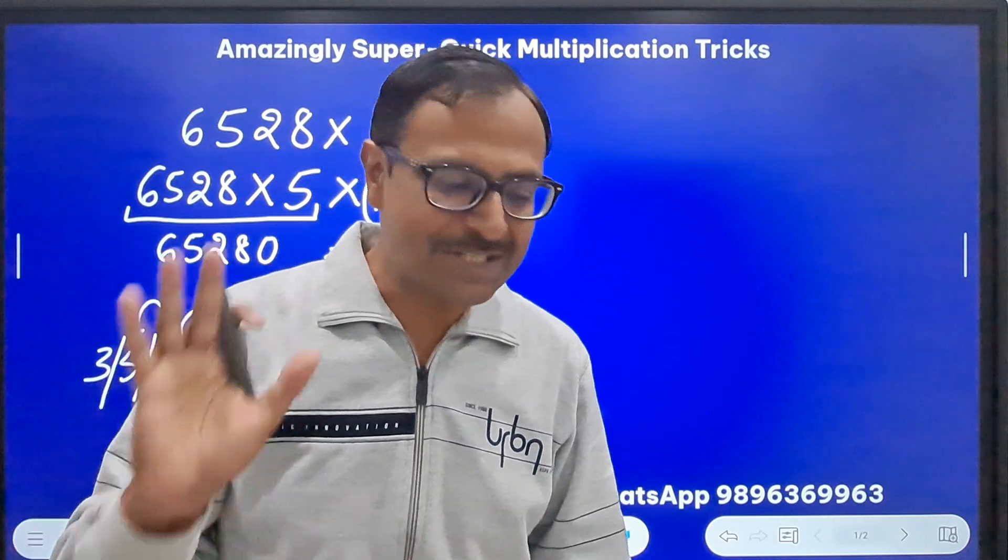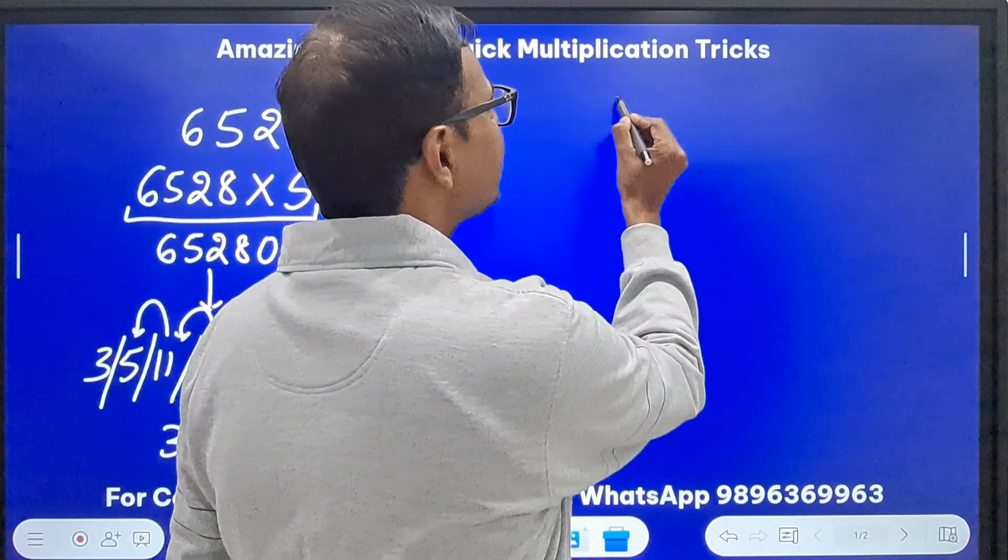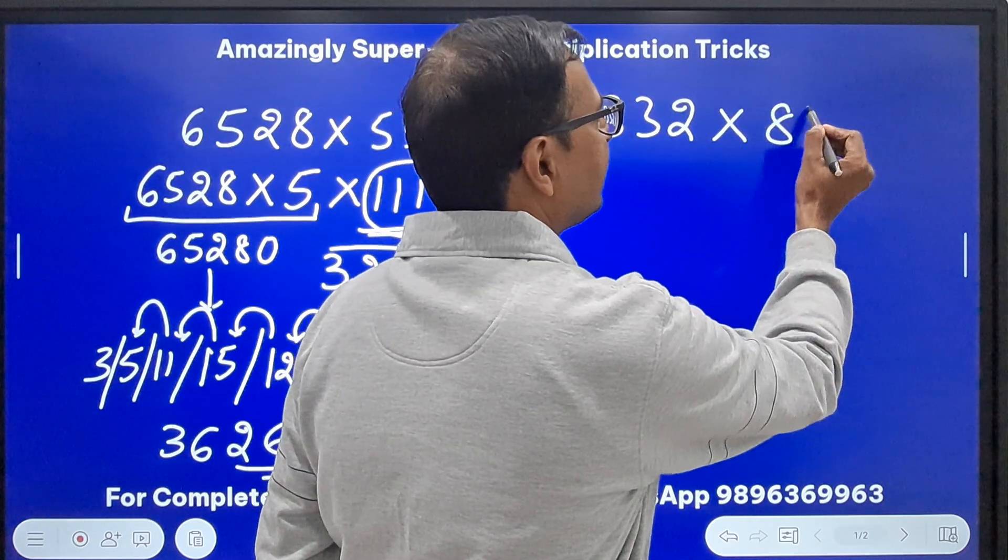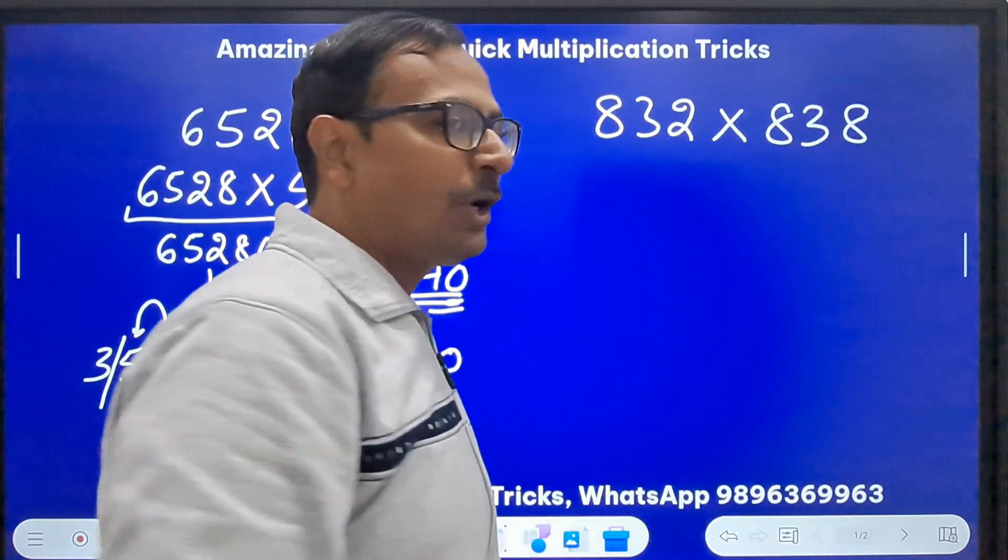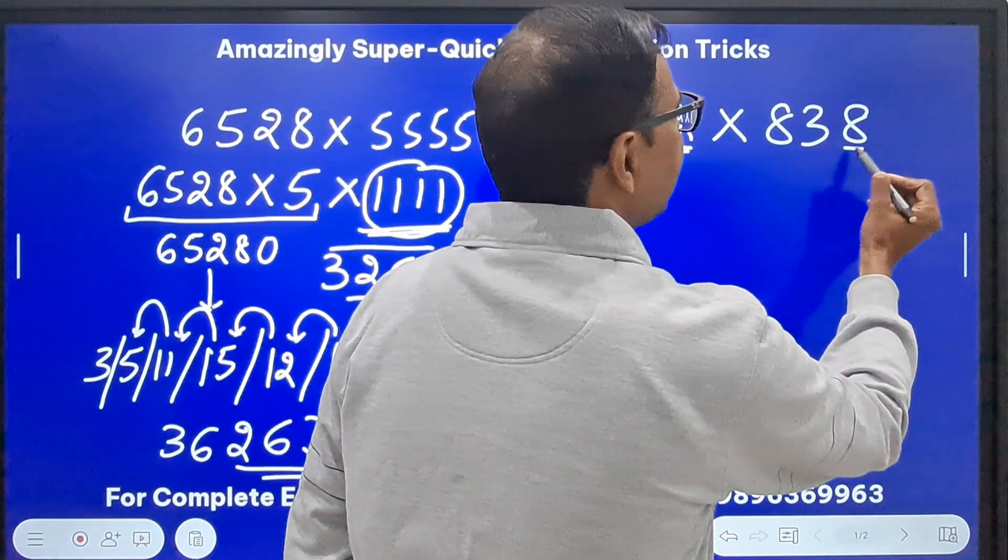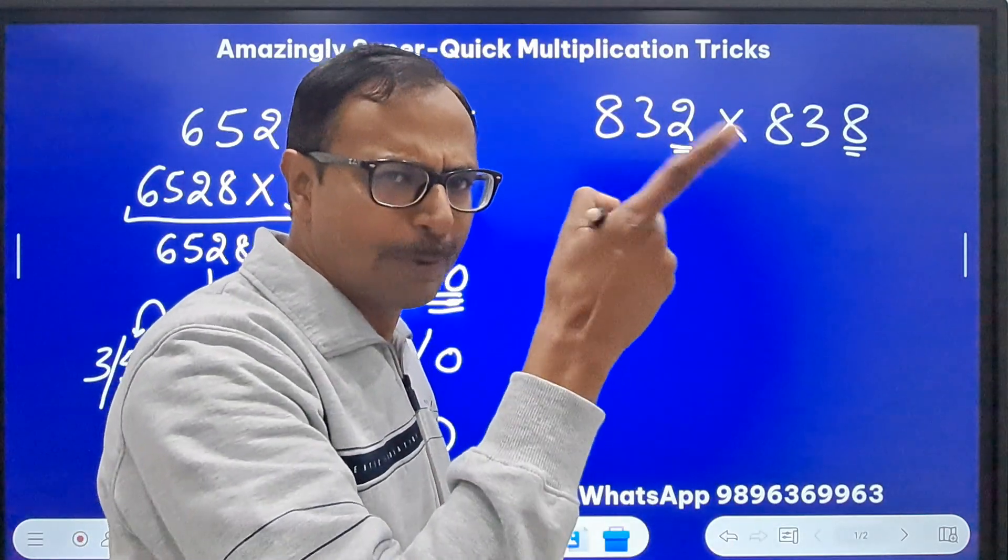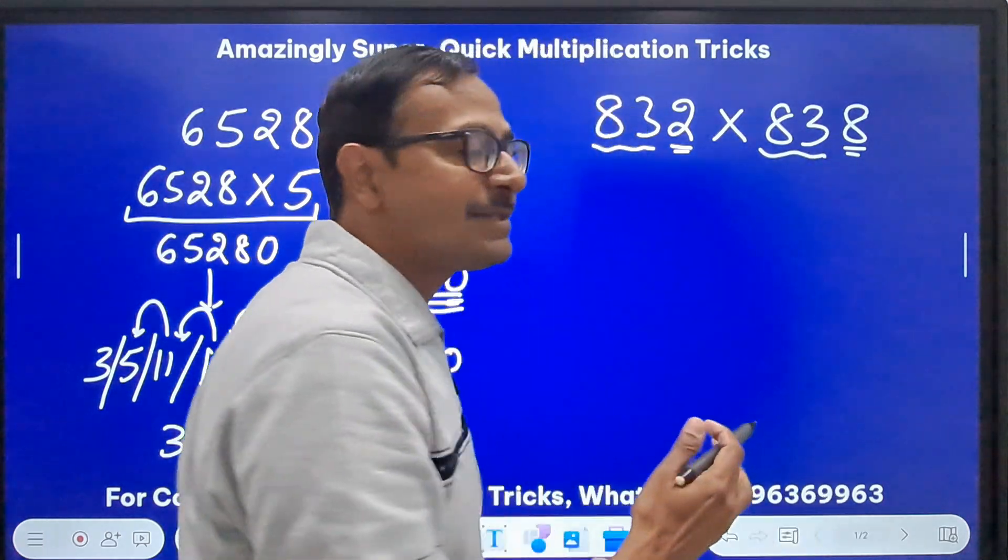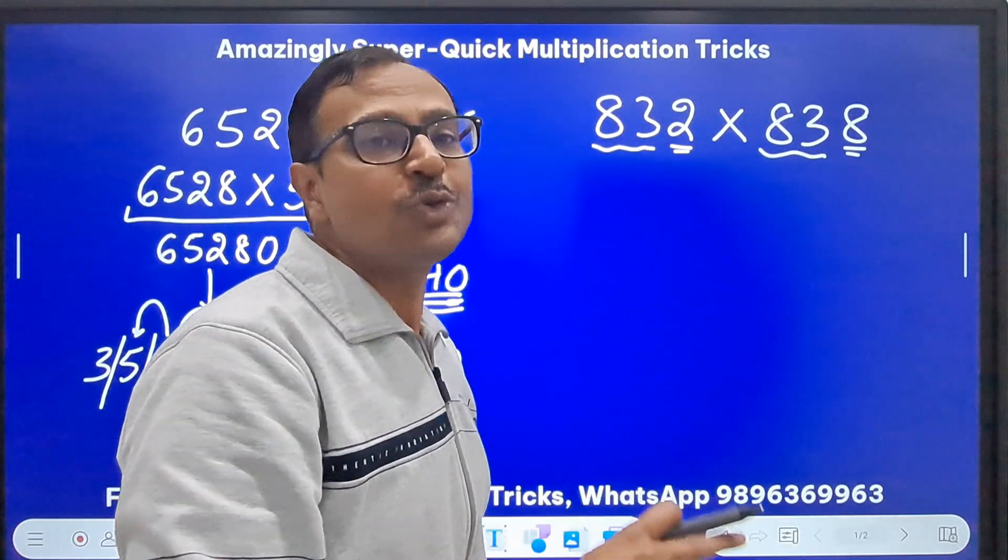Now the second trick, very interesting. Watch this. Let's do 832 and I will multiply it by 838. These are two special numbers. If you see the unit digits, they add up to 10. Two plus eight equals ten, and the remaining part 83, 83 is exactly the same.